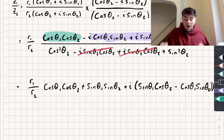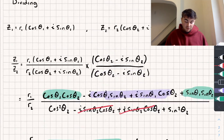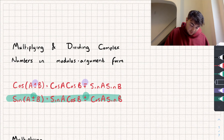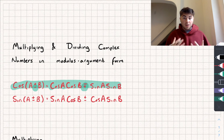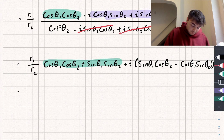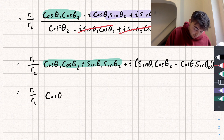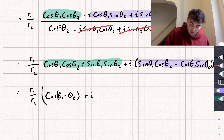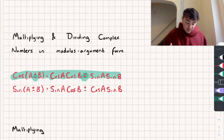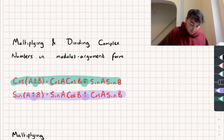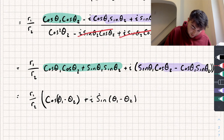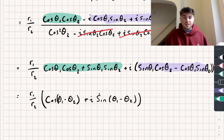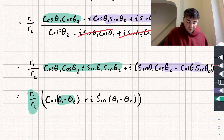Looking at the angle addition formulas again: cos theta1·cos theta2 plus sine theta1·sine theta2 corresponds to the cosine formula, and because we're adding them we subtract the angles, giving r1/r2·cos(theta1 − theta2). For the imaginary part, sine theta1·cos theta2 minus cos theta1·sine theta2 corresponds to the sine formula, giving plus i·sine(theta1 − theta2). So when dividing, we divide the moduli and subtract the arguments.